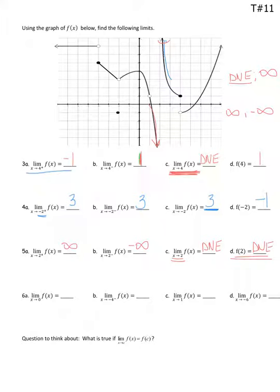Here's what I want you to do: work on that last line. There are some overall limits and some just from the left or the right, so you have to know what to do. Try that last line and then come back and see if you get them right. The first one: the limit as x approaches 0. It's an overall limit, so I ask myself: does the limit from the left equal the limit from the right? Am I going to the same y value? Yes, and that y value is 4.